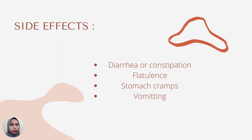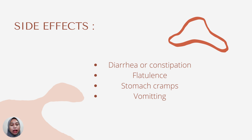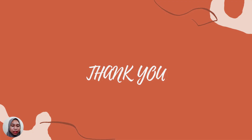The side effects of antacids include dehydration, constipation, flatulence, stomach cramps, and vomiting. However, side effects are rarely seen if you take the antacid at the recommended dose. They will only show when you take a very high dose.